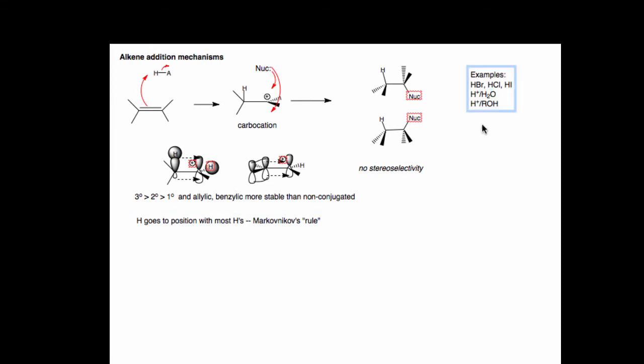And examples you'll see in the chapter include adding a hydrohalic acid, such as HBr, HCl, or HI, onto the bond, where the nucleophile is the halide. Adding H-plus and water, where the net nucleophile is water, which will eventually, after proton loss, be an alcohol. Or H-plus and an alcohol, which, after loss of a proton, that group will become an ether at the nucleophile position.